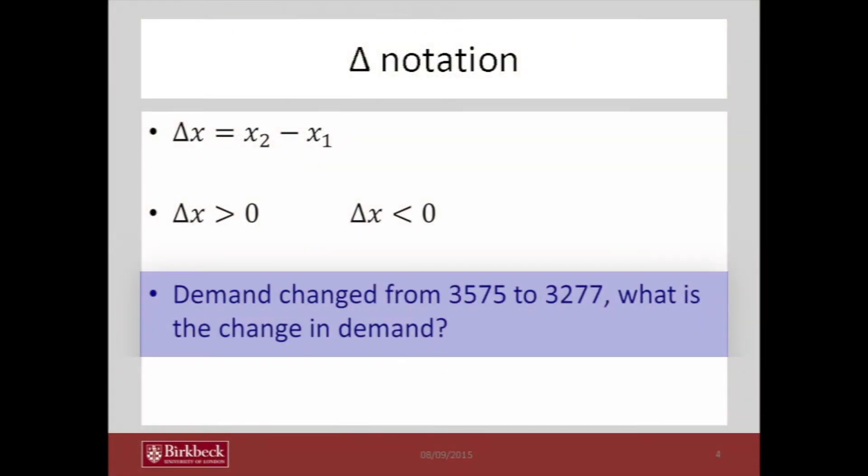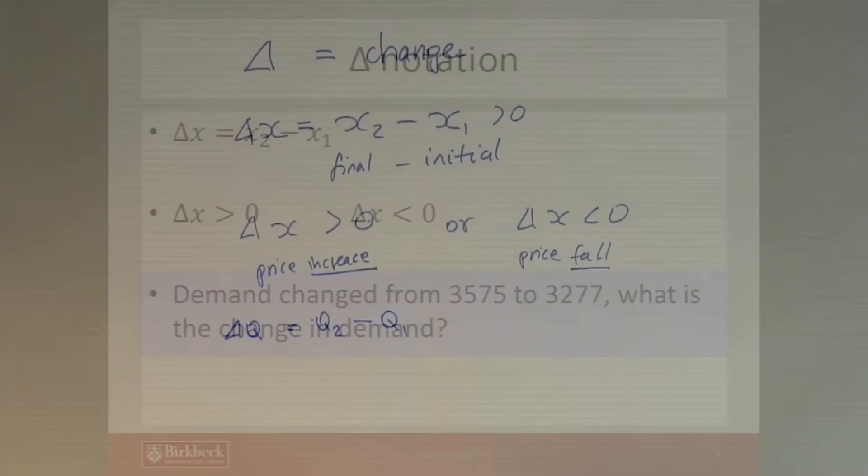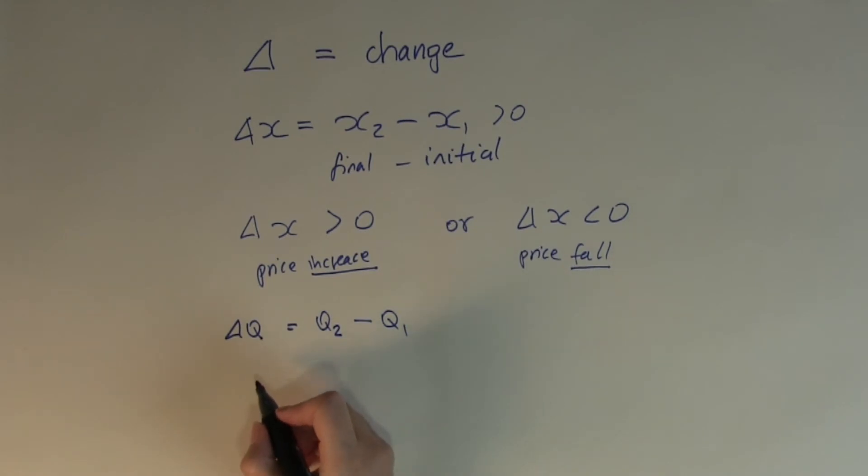So let's look at an example. Demand changed from 3575 to 3277. What is the change in demand? I want to calculate the change in demand. Demand is Q in economics. So I need to calculate the final demand minus the initial demand. Looking at that sentence, change from to tells me which is the initial and which is the final.